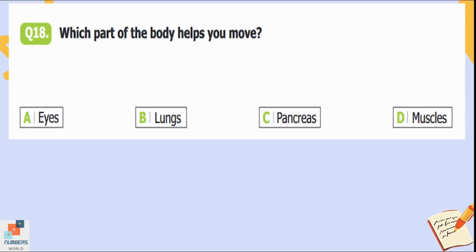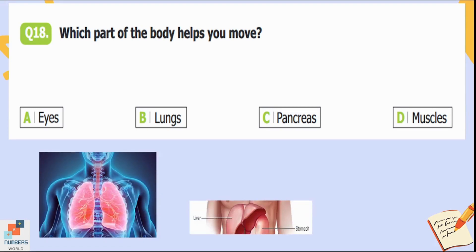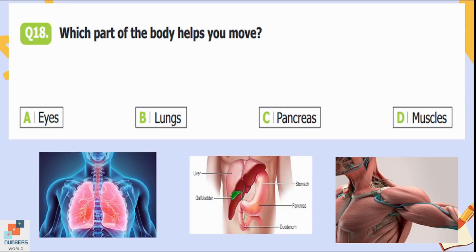Question number eighteen: Which part of the body helps you move? Option A is eyes, B is lungs, C is pancreas, and D is muscles. The movement of the muscles helps us to move our bodies. Option D is the correct answer.